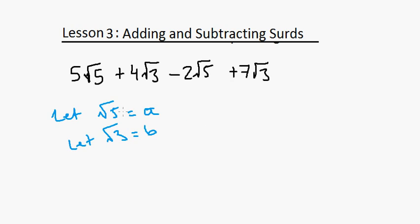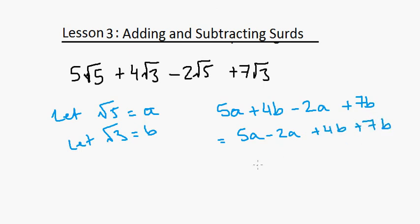You have 5A + 4B - 2A + 7B. And you can rearrange it so it's 5A - 2A plus 4B plus 7B, which is the same as 3A plus 11B. And now you can just plug them back in. So now you have 3√5 + 11√3.